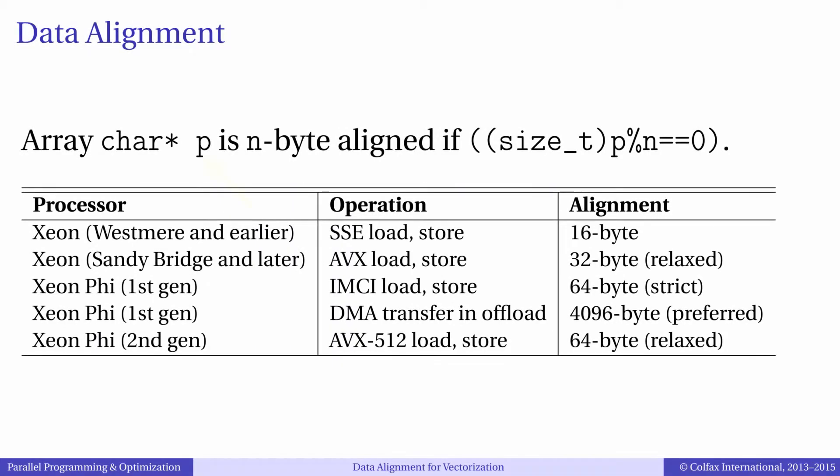The definition of alignment is this: a memory address is aligned to an n-byte boundary if this address is a multiple of n.